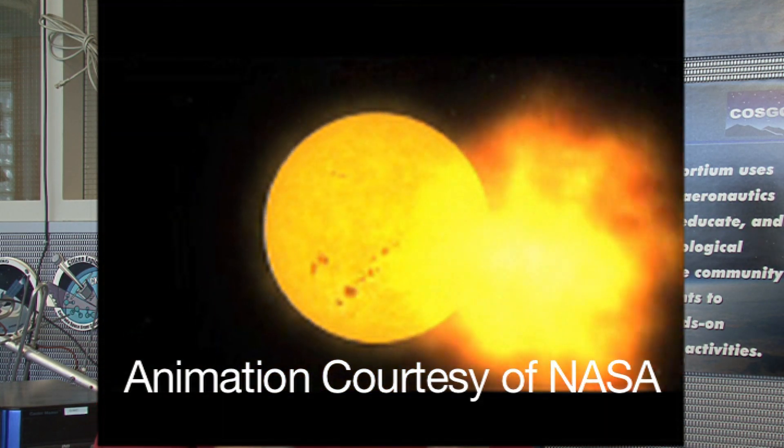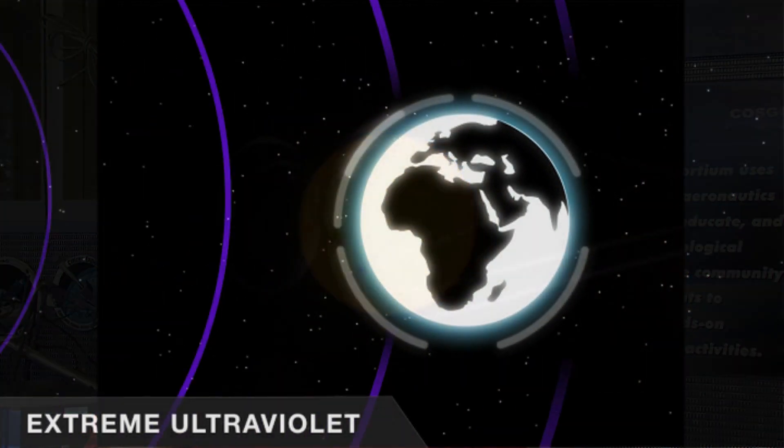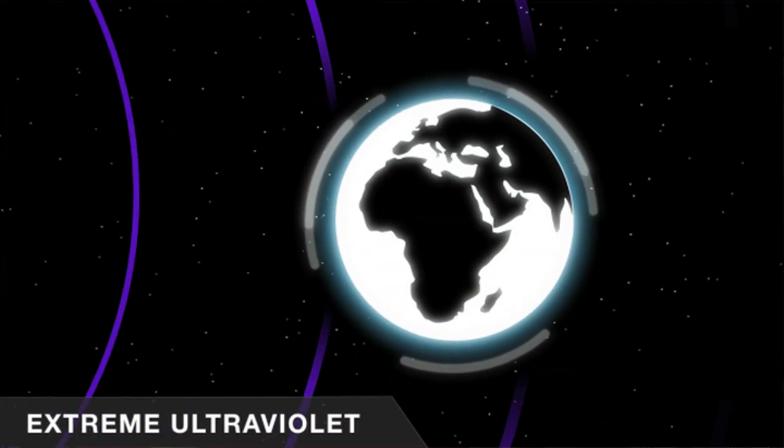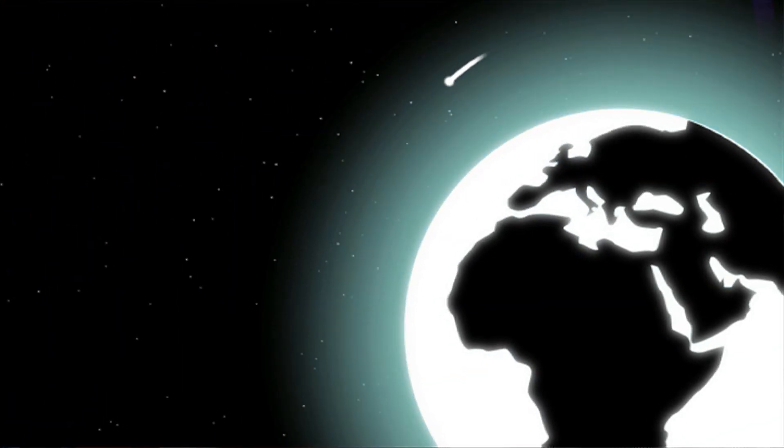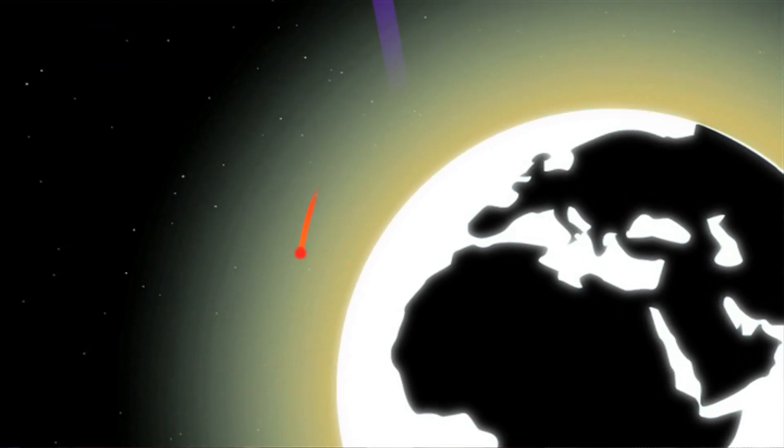As solar particles impact the Earth's atmosphere, it causes the atmosphere to expand slightly, and it can be quite drastic at times, especially during major solar events, and can cause satellites to rapidly decay in altitude.